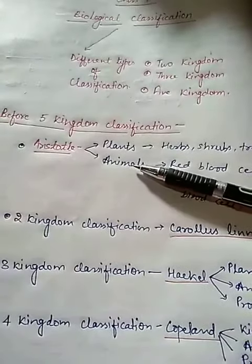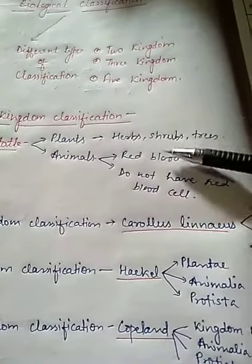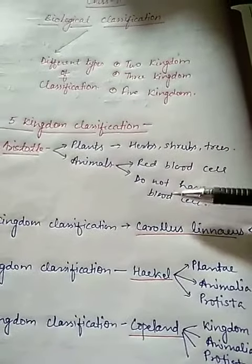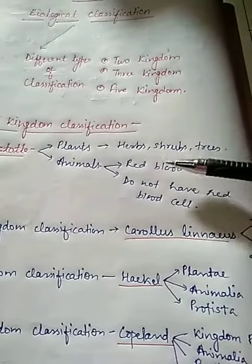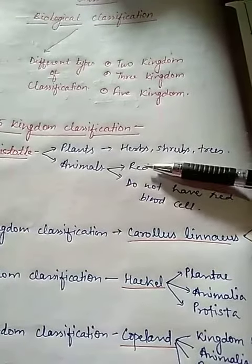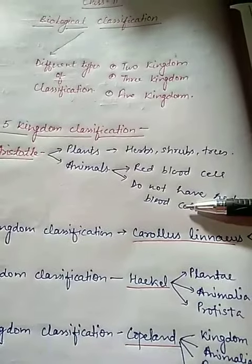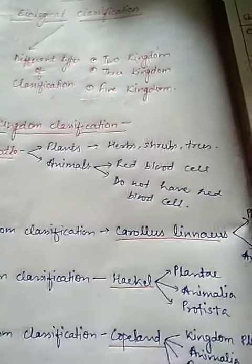In the case of animals, Aristotle divided them on the basis of whether they have red blood cells or not. Those organisms having red blood cells were placed in one category, and those without red blood cells were placed in a different category.